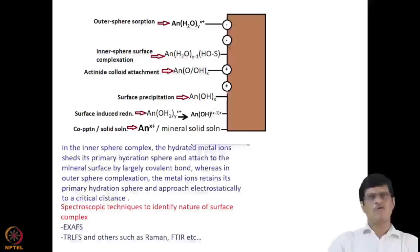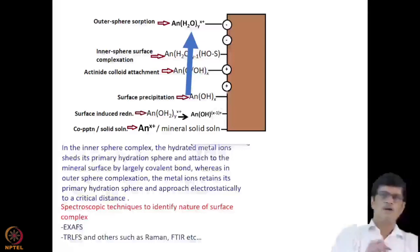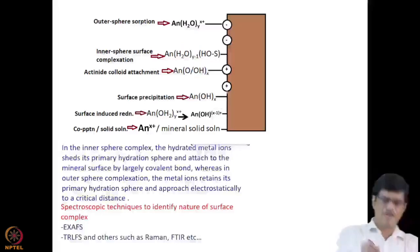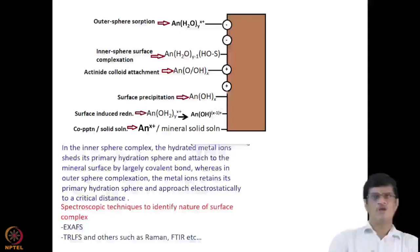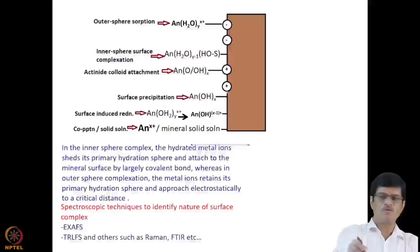If one wants the finer details of the mechanism, the following can be considered. For outer sphere sorption, the actinide species ANX+ with Y water molecules forming a hydrated complex comes very close to the surface and forms an outer sphere complex, interacting with the negatively charged part and binding at the surface.